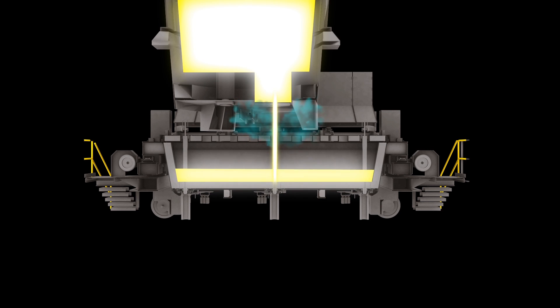As steel flows through the tundish, a series of flow modifiers control the flow, allowing for optimum inclusion flotation and steel cleanness. The steel then exits the tundish to each of the three strands. We use refractory stopper rods to control flow from tundish to mold.